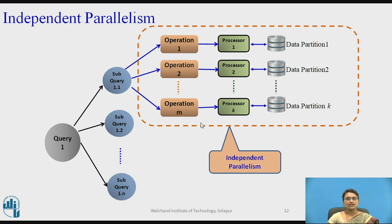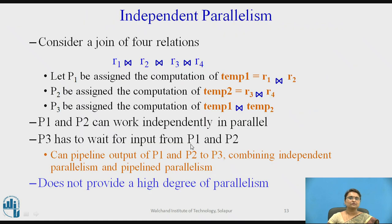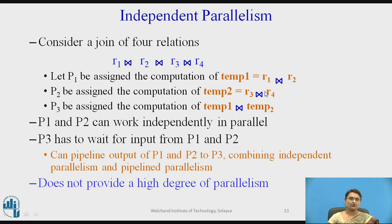Ideally, independent parallelism is not applicable everywhere. Consider the same example of joining 4 relations R1, R2, R3, R4. For independent parallelism, we take two join operations in parallel: R1 joins with R2, stored as temp1, and R3 joins with R4, stored as temp2. Temp1 and temp2 are working in parallel and independently — they are not dependent on each other. So here we have applied independent parallelism.